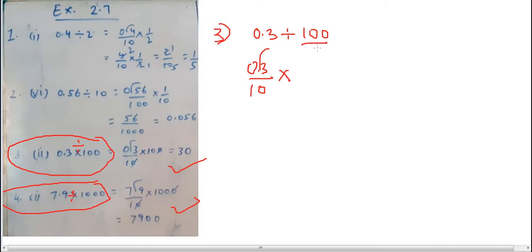So 100 becomes 100 by 1, then it will become 1 by 100. Clear? It will become 1 by 100. So simply, 3 times 1 is 3, it will be 3. And 10 into 100 is 1000.